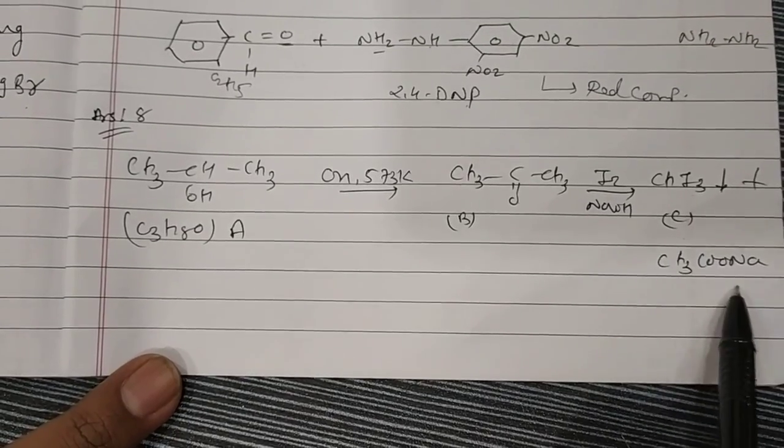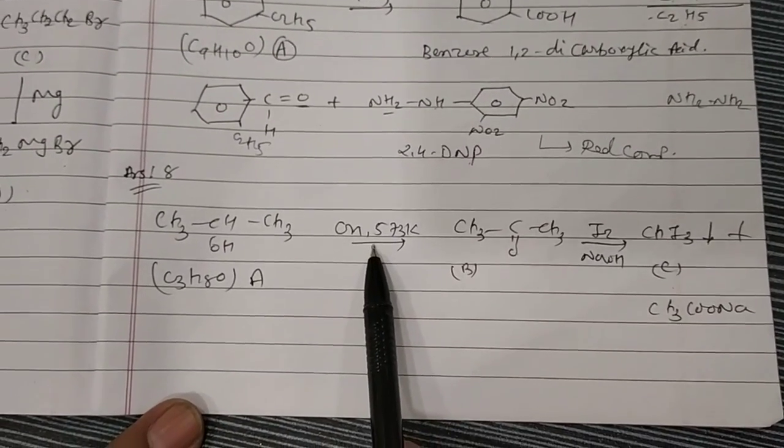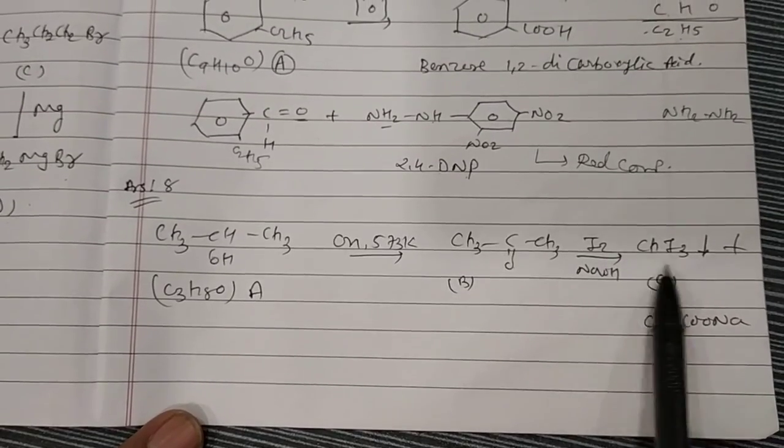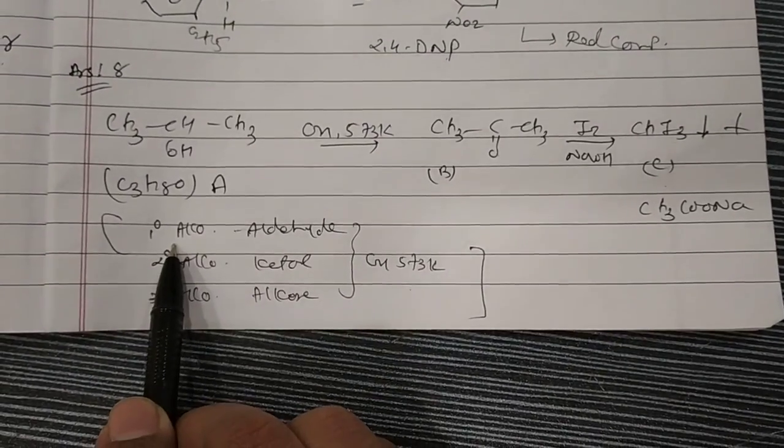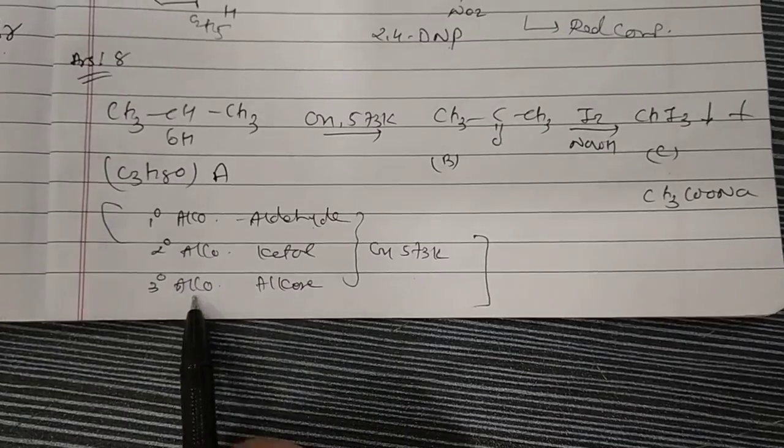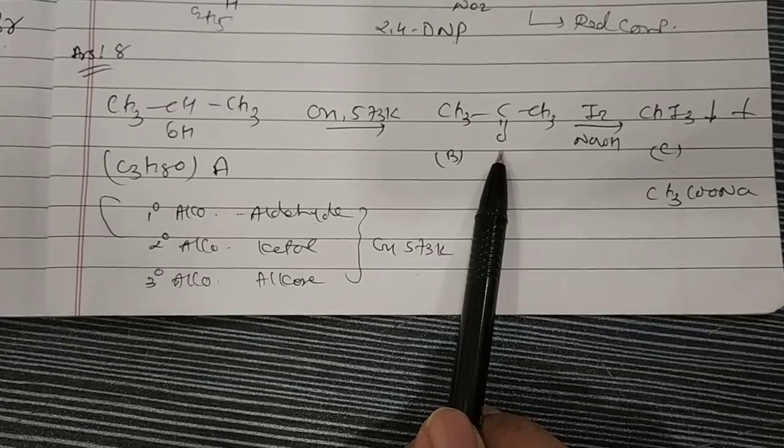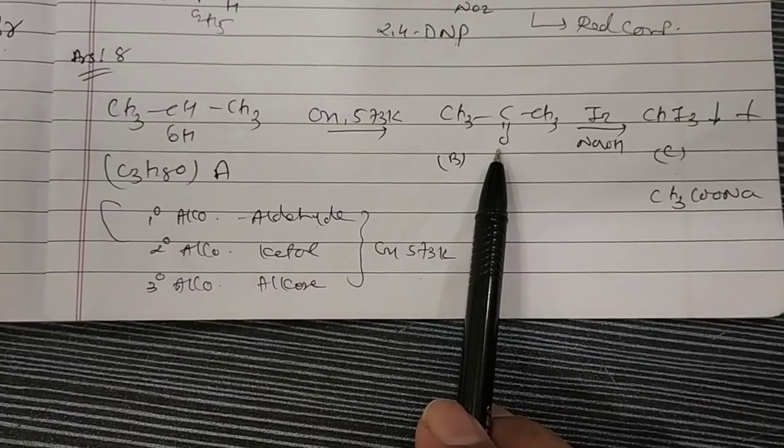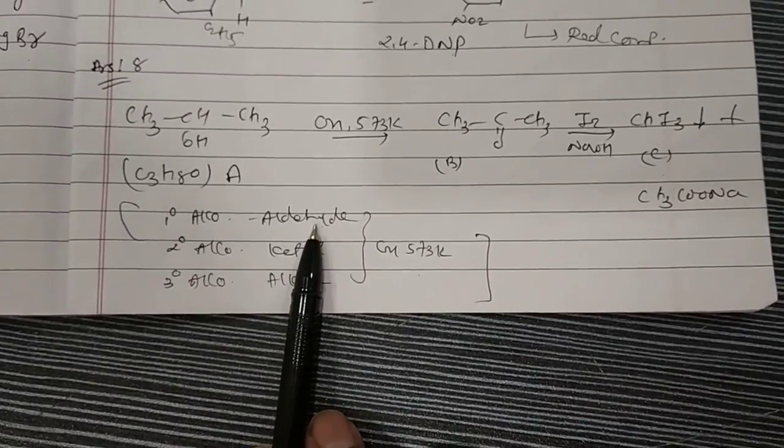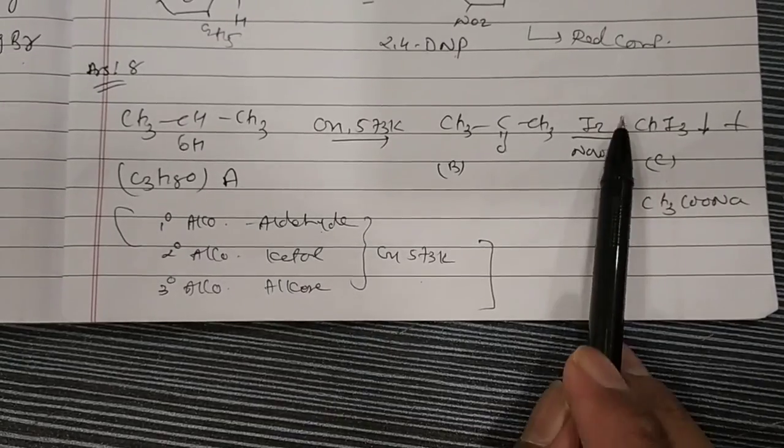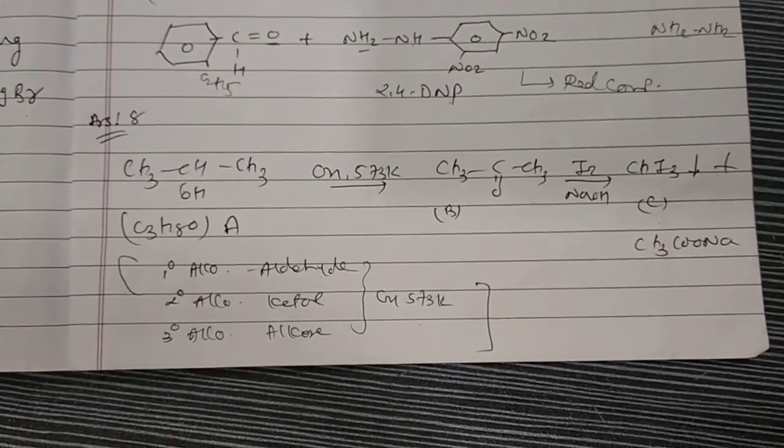This is very simple. C3H8O is secondary alcohol. When heated at copper at 573K you get CO, and CO undergoes I2 in NaOH you get CHI3. Maybe you've forgotten, so remember copper at 573K reaction. Primary alcohol gives aldehyde, secondary alcohol gives ketone, tertiary alcohol gives alkene. How do we know it's not primary alcohol? Primary would give aldehyde. Look, the reaction clearly says does not reduce Fehling solution. Aldehyde reduces Fehling solution. Does not means it's not reducing, means not aldehyde. That's why it's secondary alcohol. And B component gives iodoform test, which is given only by CH3CO compound. That's why this gives iodoform test.